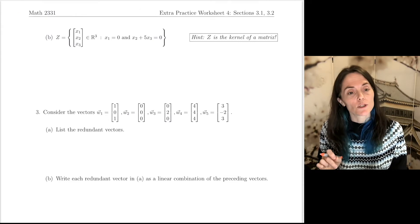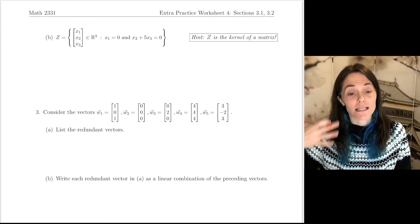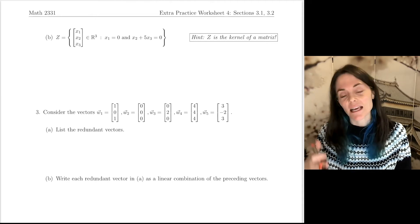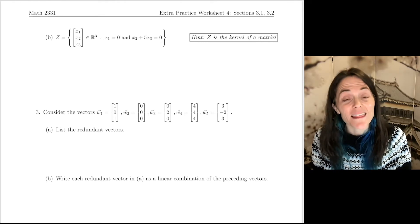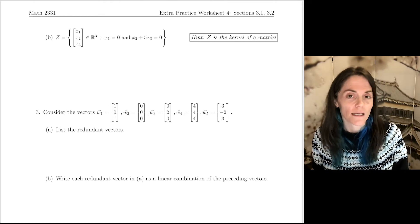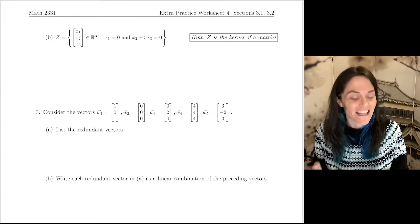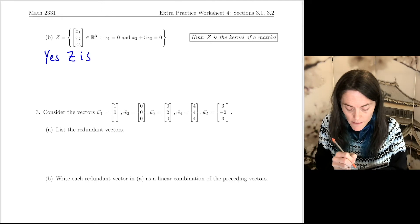Next part, 2B. Here, we're given X1, X2, X3 in R³ such that X1 equals 0, and X2 plus 5X3 equals 0. With this hint, you should know the answer is yes, because every kernel is a subspace. In fact, we justified that in class. So the answer is yes, Z is a subspace.